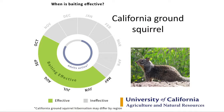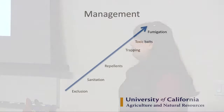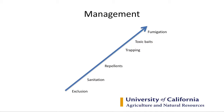An example of why life cycle matters: for California ground squirrel management, adults are active from late January through October. Toxic baiting is only effective from May to October, not from January to May, because the carrier for the toxic bait is grain, and ground squirrels don't start eating grain until May. Management ranges from habitat modification and sanitation at the bottom, through repellents, trapping, toxic baits, and fumigants.